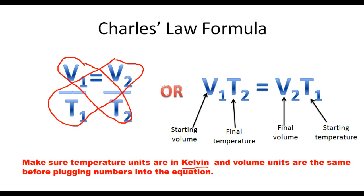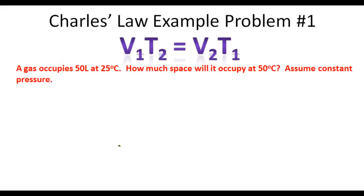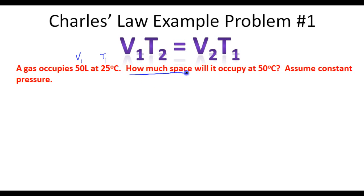Let's work a couple of examples using the Charles' Law formula. In this problem it says a gas occupies 50 liters at 25 degrees Celsius. How much space will it occupy at 50 degrees Celsius, assuming constant pressure? So V1 is 50 liters, T1 is 25 degrees Celsius, and we're trying to find V2. T2 is 50 degrees Celsius.